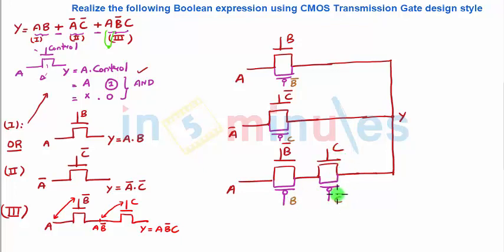When B = 1, B̄ = 0, so both the NMOS and PMOS of that transmission gate are on, and Y = A·B. This can be similarly explained for all the transmission gates. The reason we use transmission gates is to get a proper logic 1 and a proper logic 0 at the output — both PMOS and NMOS are on simultaneously, which we covered in previous clips.